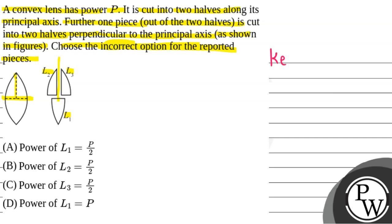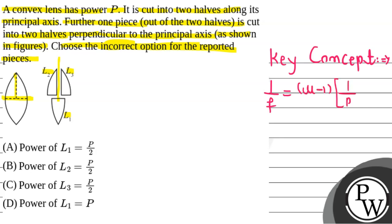Let's start with the solution. Before we do, let's talk about the key concept we are going to use for this question. We recall the lens-maker formula: 1/f = (μ − 1) × (1/R1 − 1/R2). The values R1 and R2 are the radii of curvature on either side of the lens, and 1/f represents the power of the lens.